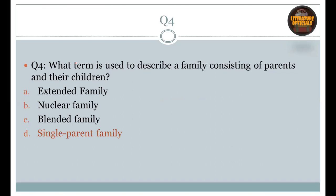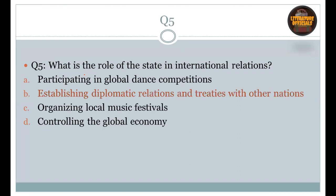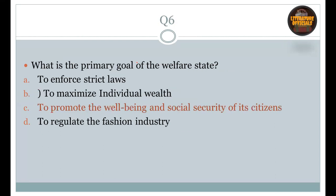Question number 4: What term is used to describe a family consisting of parents and their children, that is a single parent family? Right option is D. Question number 5: What is the role of the state in international relations? It is establishing diplomatic relations and ties with other nations. Right option is B. Question number 6: What is the primary goal of the welfare state? Right option is C: to promote the well-being and social security of its citizens.